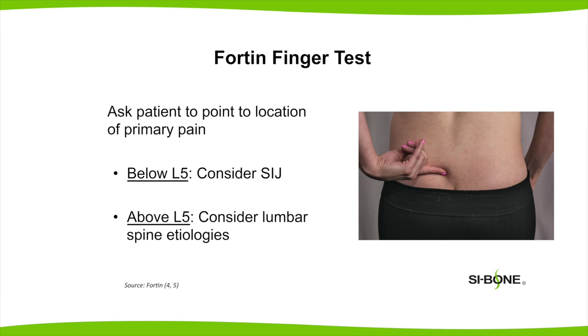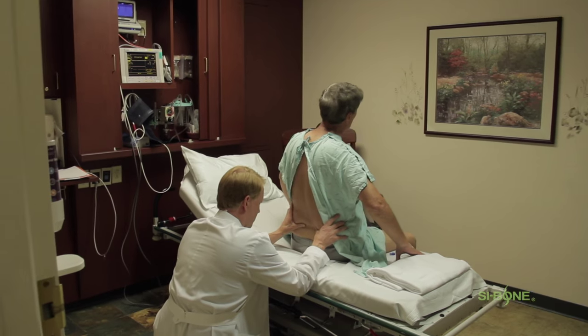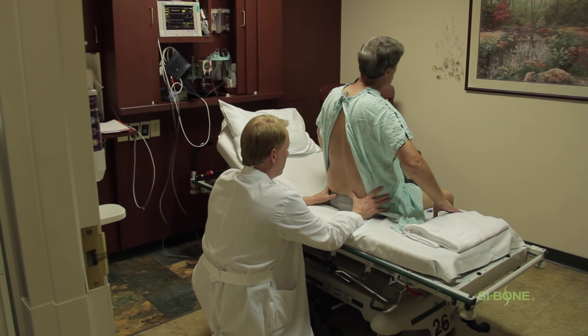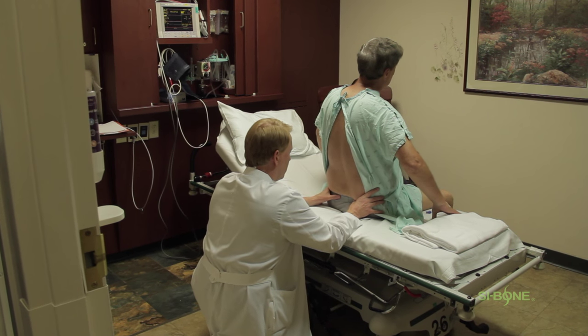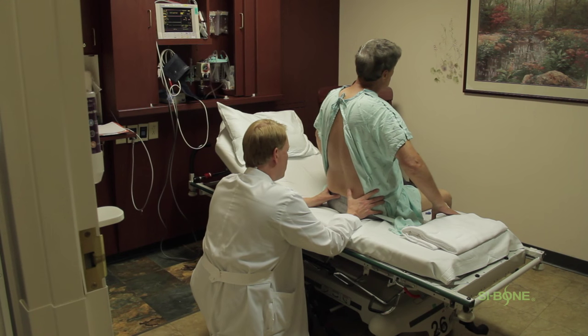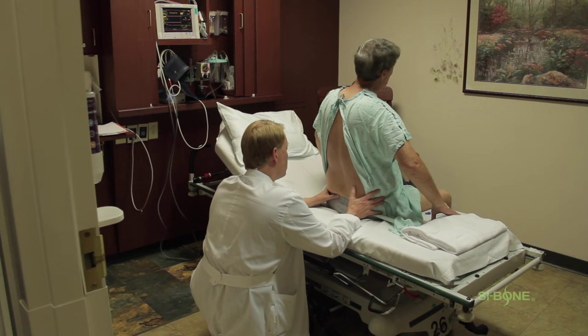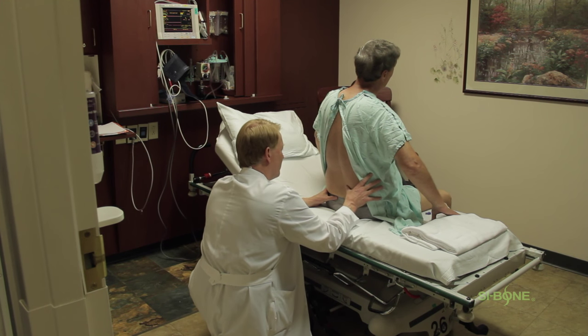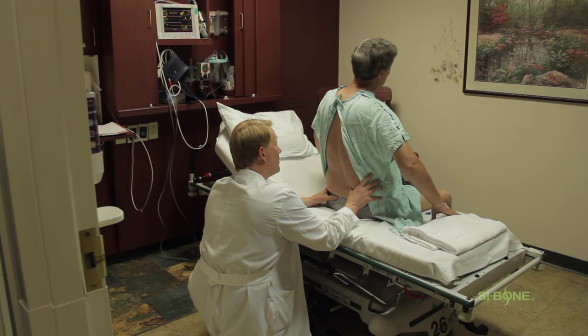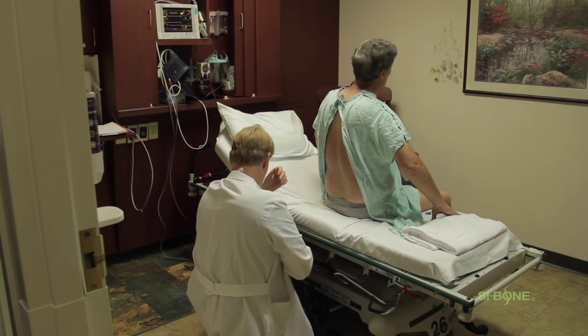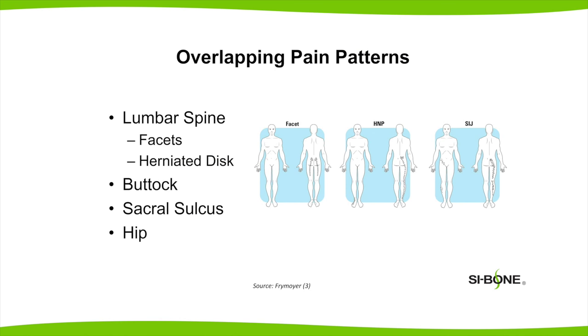The SI exam will start off with the patient first pointing to where their pain is located. That's typically called the forward finger — if they point within about a centimeter to the PSIS on the affected side. Palpation of that region is quite painful, and can be done with the patient either standing or sitting. You can differentiate between the lumbar spine or L5-S1 region versus the inferior SI joint pole with palpation. I try to educate the patient on pain coming from the lumbar spine versus the buttock or sacral sulcus or the hip prior to performing provocative testing.